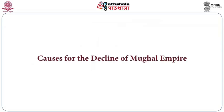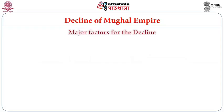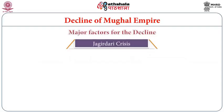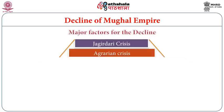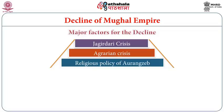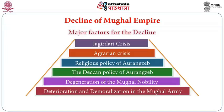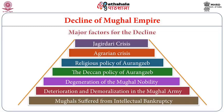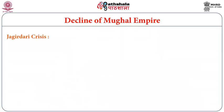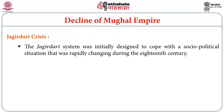There are a number of important factors responsible for the decline of the Mughal Empire: the Jagirdari crisis, agrarian crisis, religious policy of Aurangzeb, the Deccan policy, degeneration of Mughal nobility, deterioration of the Mughal army, and intellectual bankruptcy. We will now focus first on the Jagirdari crisis and how it played an important role in the decline.